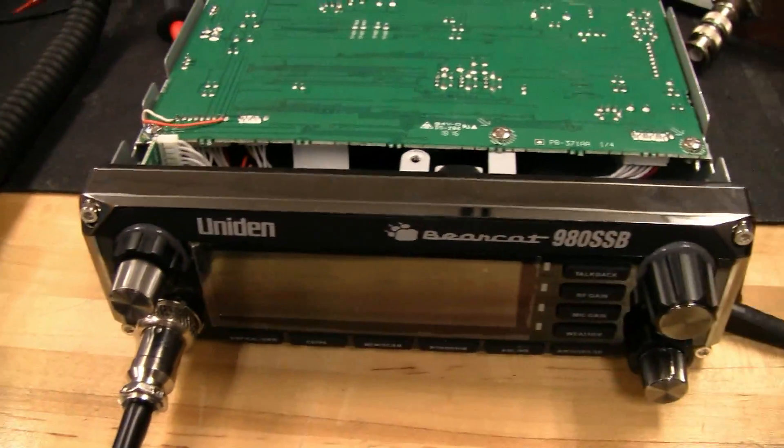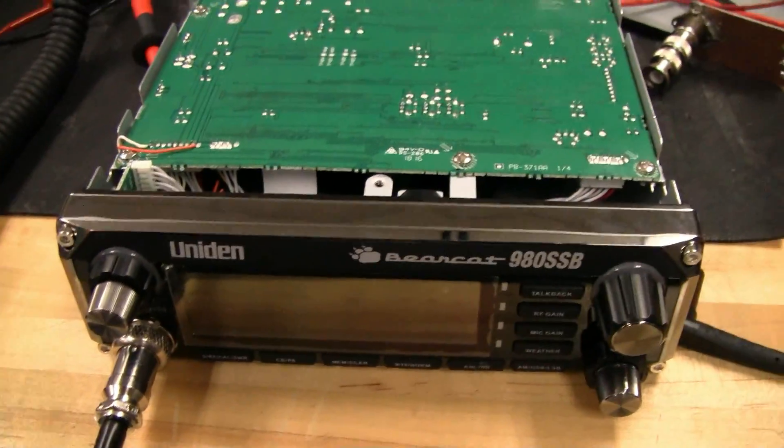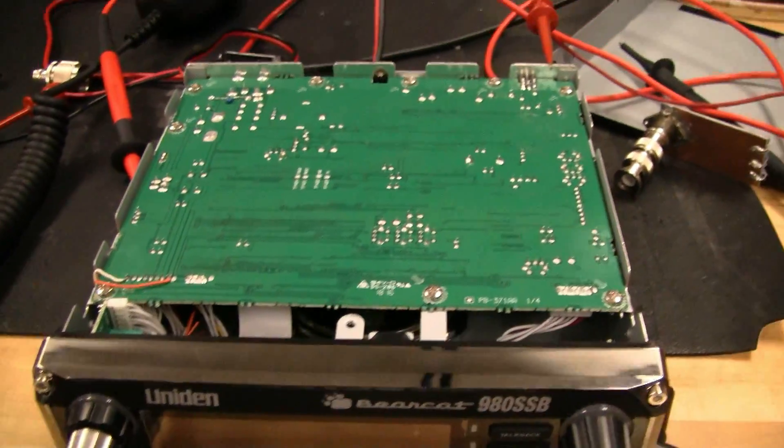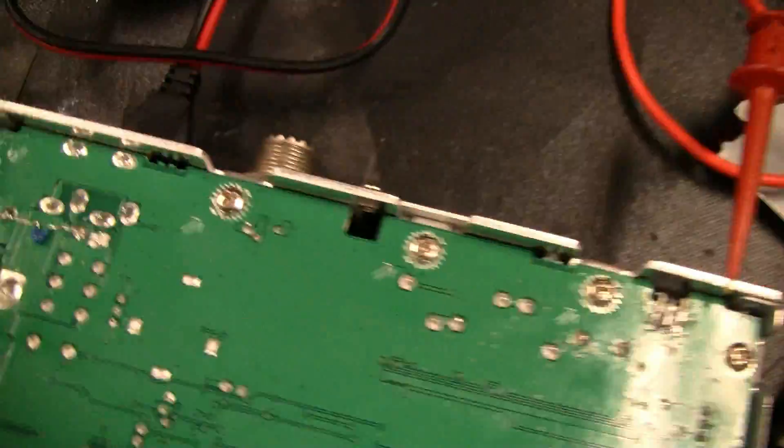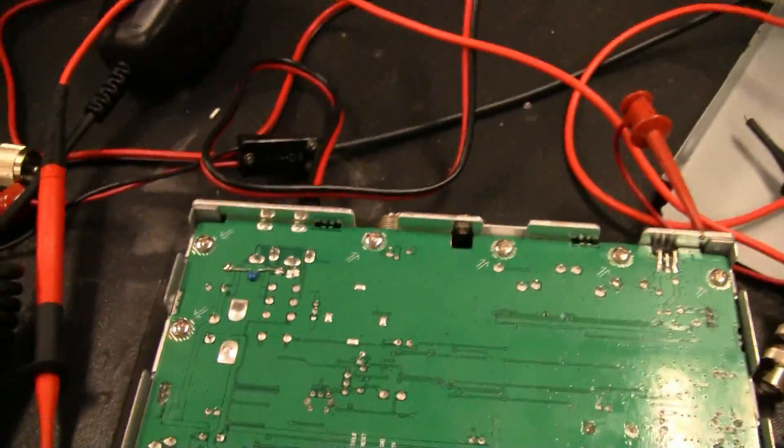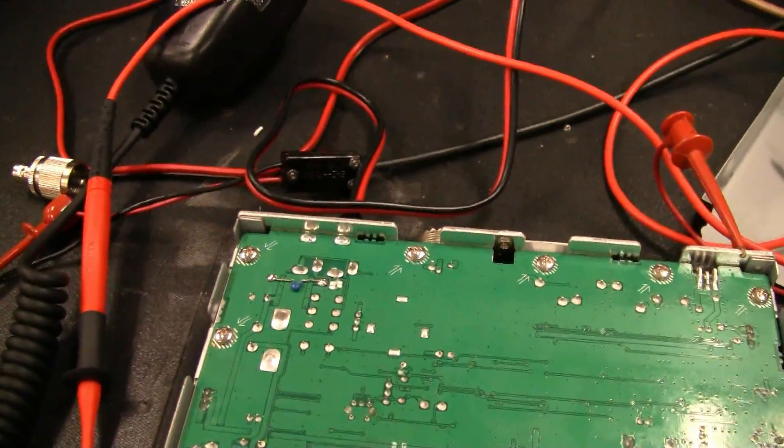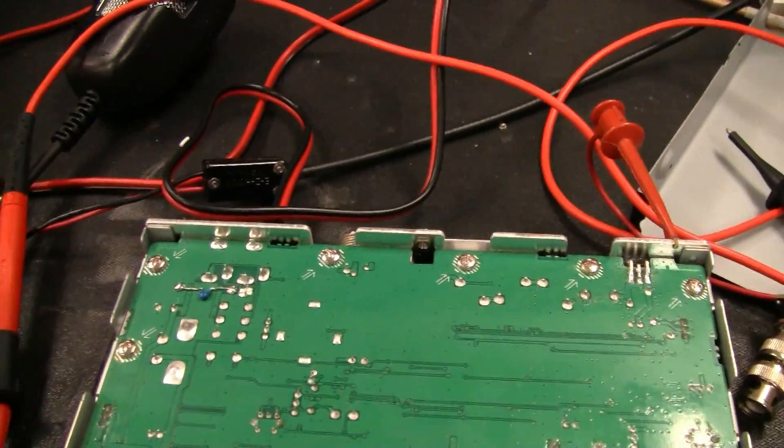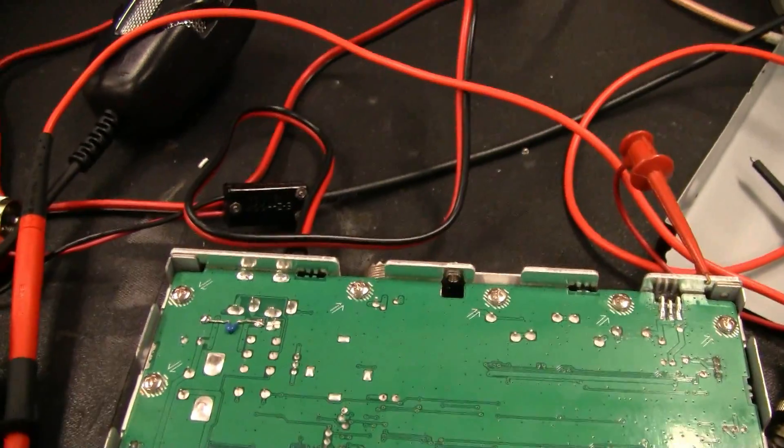So the first thing you're going to want to do is find a 12 volt source of power, or rail power, inside your radio. Now the easy way to do this would just to be connected to the power rails, right where the main power comes into the radio. But then it'll still be powered even if the radio is off, and there's power connected to it, like in your car or whatever.